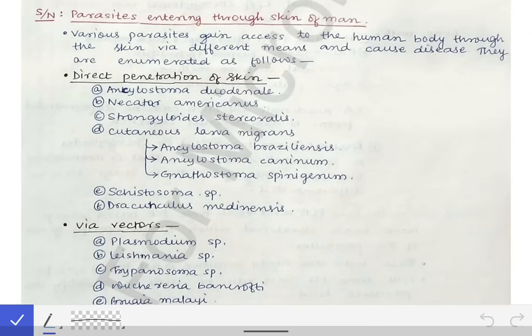Now let's discuss a very short topic which may be asked in your viva voce. Sometimes examiners may ask you to give some examples of parasites which enter through the skin of man. So there are various parasites which gain access to the human body through skin via different means and they cause different infections.